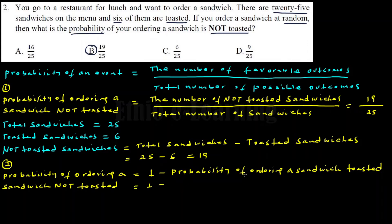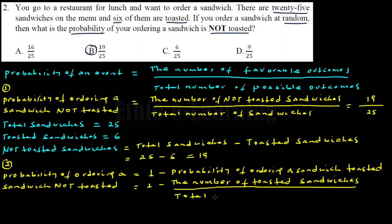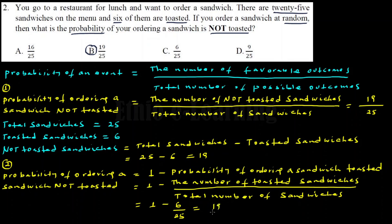So the probability of ordering a sandwich not toasted equals one minus the probability of ordering a sandwich toasted, which equals one minus the number of toasted sandwiches on the menu divided by the total number of sandwiches on the menu. That is one minus six over twenty-five.